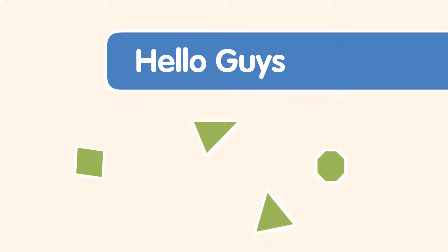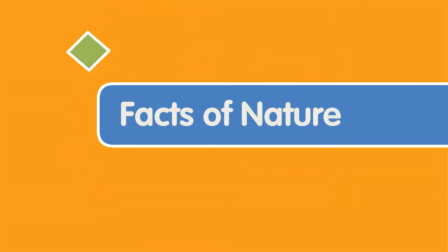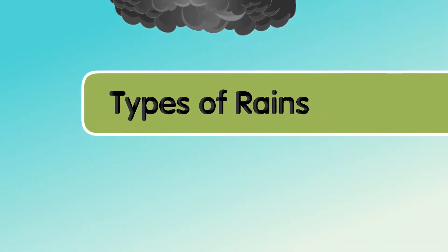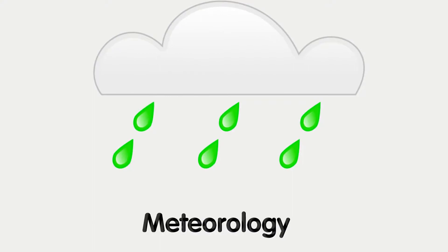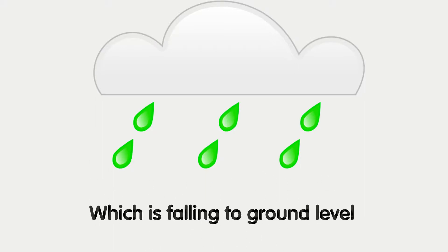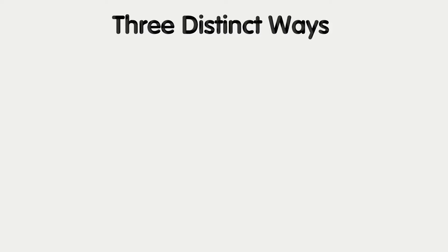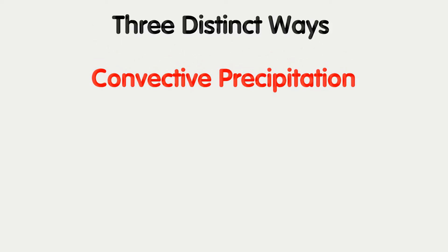Hello guys, this is our channel Facts of Nature. Today we are going to see about the types of rains in meteorology. The various types of precipitation often include the character or phase of the precipitation which is falling to ground level. There are three distinct ways that precipitation can occur.